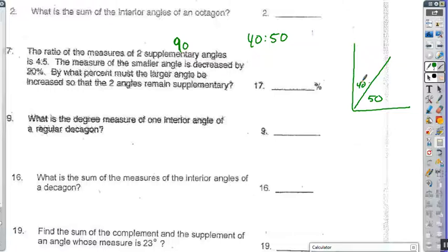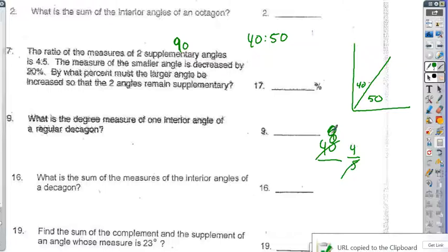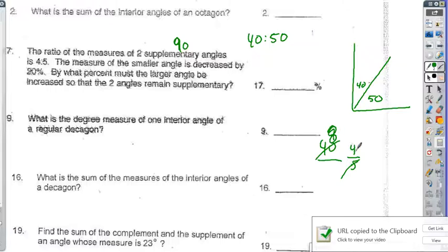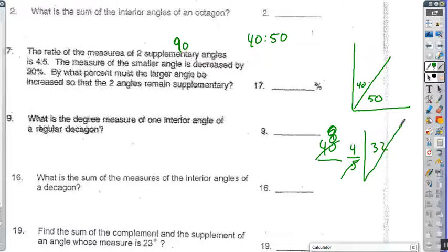The measure of the smaller angle is decreased by 20%. So, 20% is 1 fifth. What percent must the larger angle be increased by so the two angles remain supplementary? That means 40 times 4 fifths, so 8 times 4 is 32. So now the new angle measurement is 32. That means this angle is going to have to be 90 minus 32, which is going to be 58.